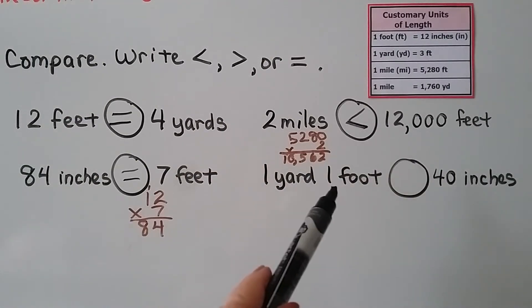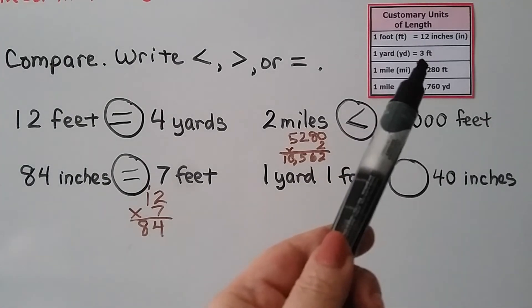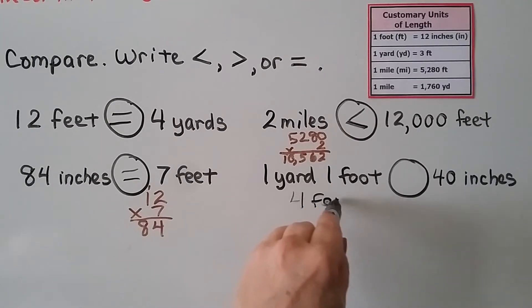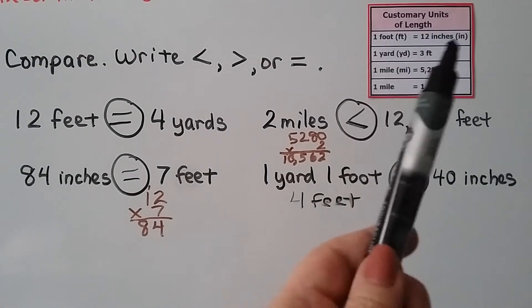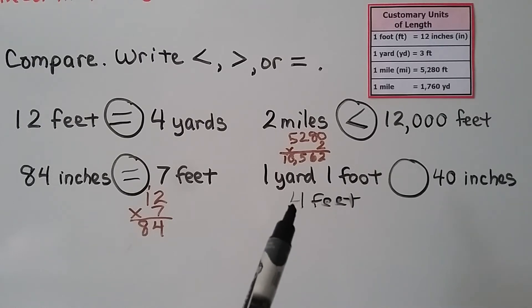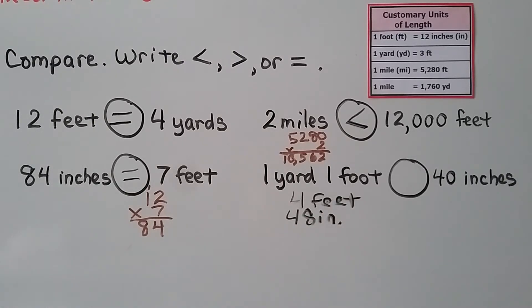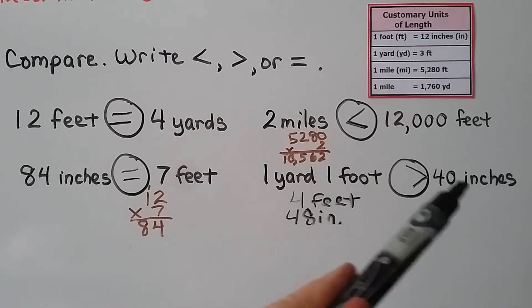What about 1 yard and 1 foot compared to 40 inches? One yard is 3 feet, plus another foot gives us 4 feet. Now we compare 4 feet to 40 inches. There are 12 inches in 1 foot, so 4 times 12 is 48. Four feet equals 48 inches, and 48 inches is greater than 40 inches. When doing these comparisons, you may need to convert both sides before comparing.